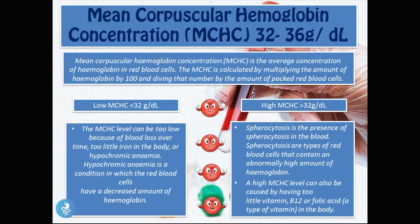The last red blood cell test is the mean corpuscular hemoglobin concentration, or MCHC, with a normal value of 32 to 36 grams per deciliter. The MCHC is the average concentration of hemoglobin in the red blood cells. It is calculated by multiplying the amount of hemoglobin by 100 and then dividing that number by the amount of packed red blood cells.